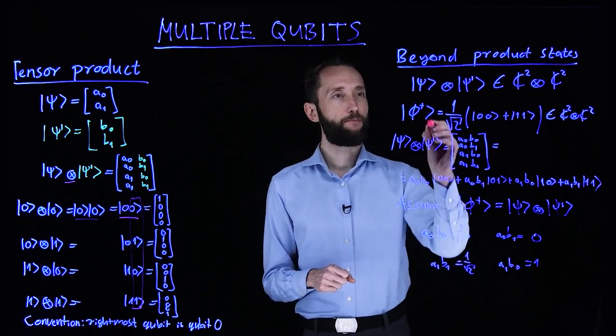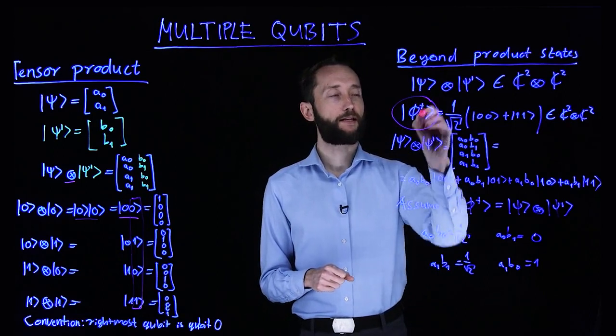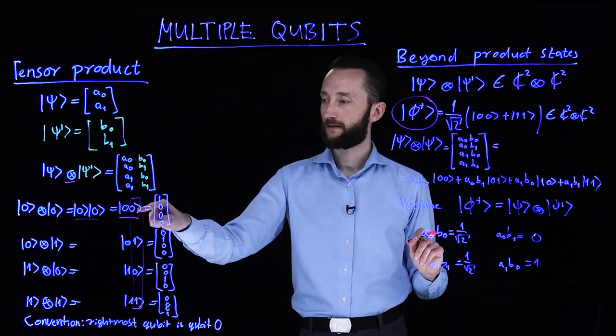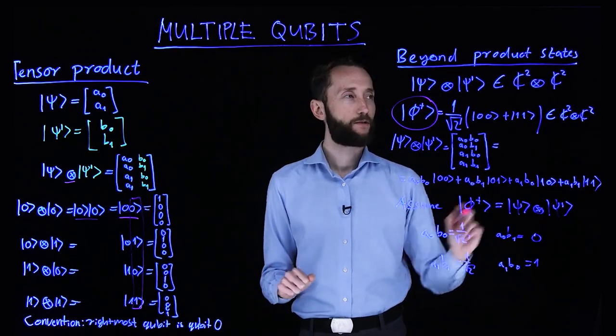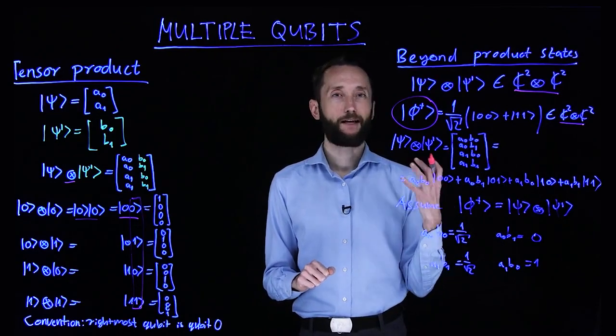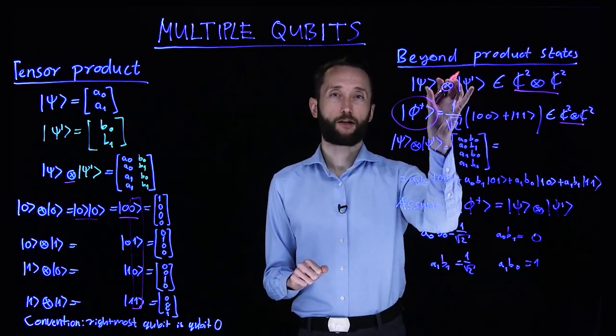So one example is the phi plus state. So it's written as an equal superposition of two basis vectors, 0, 0, and 1, 1. So it's definitely in the same space as our product vector, but it cannot be written as a product vector.